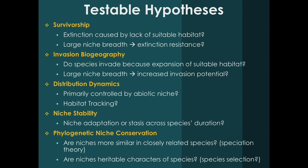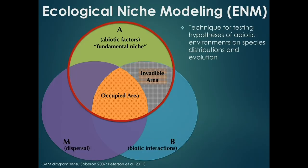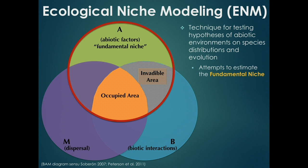With ecological niche modeling, what we're primarily doing in estimating past distributions is trying to estimate the abiotic niche of these species using fossil occurrence data and fossil environments. We wish this technique could estimate the fundamental niche of taxa, but probably what we are estimating is something more similar to a potential niche — which is still very useful and allows us to test many interesting hypotheses.